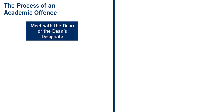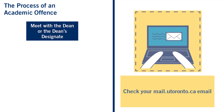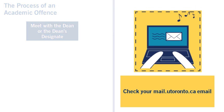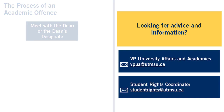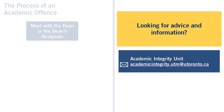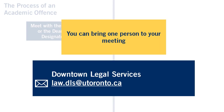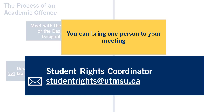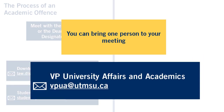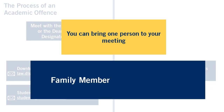The office of the dean will invite you to a formal meeting through your mail.utoronto.ca email. While you're waiting to have the meeting, connect with UTMSU for advice and information about your rights and responsibilities. You can also contact the Academic Integrity Unit in the office of the dean for support. You can bring a Downtown Legal Services representative, the Student Rights Coordinator, the Vice President for Academic Affairs, or a family member to the meeting.